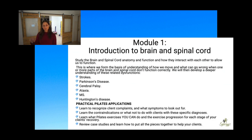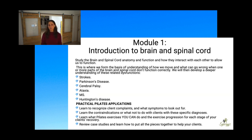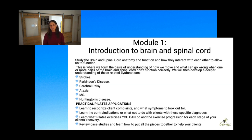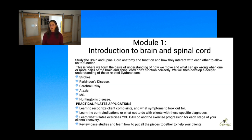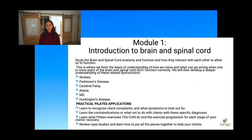In this module in particular, we're going to talk about brain and spinal cord anatomy, how they interact, and how we function. Then we'll move into conditions: strokes, Parkinson's disease, cerebral palsy, ataxia, multiple sclerosis, and Huntington's disease.